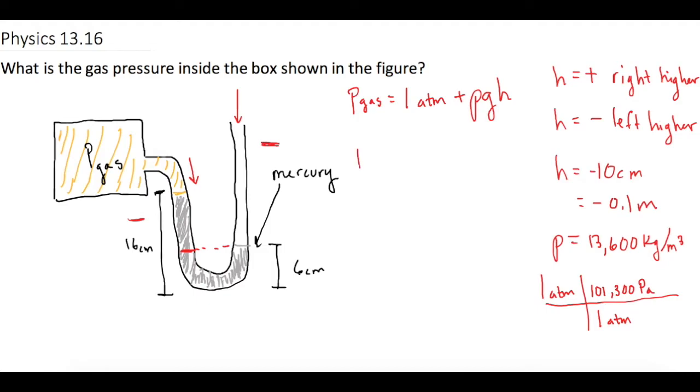So now when we plug that in, the pressure of the gas is equal to 101,300 pascals plus, I'm going to run out of room, do it down here, plus the rho of mercury, which we said is 13,600, times gravity, which is 9.8, times the height difference, which we said is a negative 10, or negative 0.1 meters.